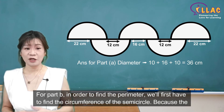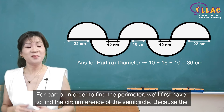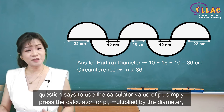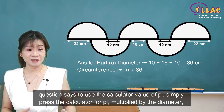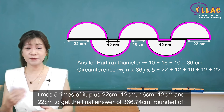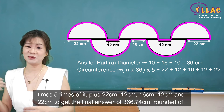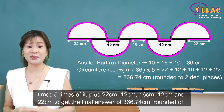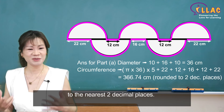For Part B, in order to find the perimeter, we'll first have to find the circumference of the semicircle. Because the question says to use the calculator value of pi, simply press the calculator for pi multiplied by the diameter, times 5, plus 22 cm, 12 cm, 16 cm, 12 cm, and 22 cm, to get the final answer of 366.74 cm. Round it off to the nearest 2 decimal places.